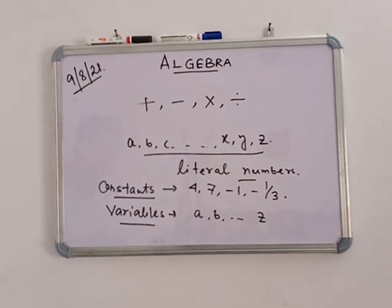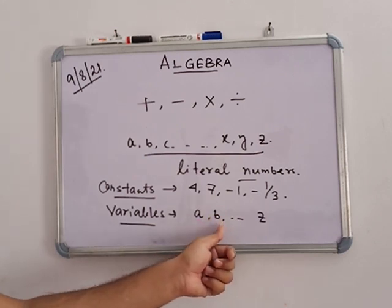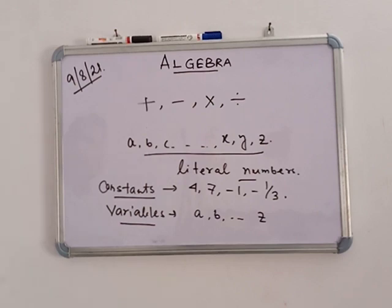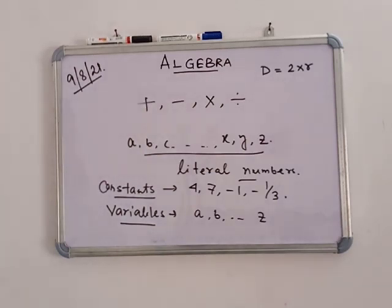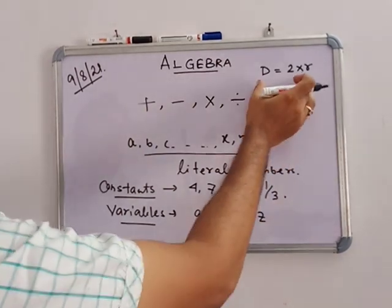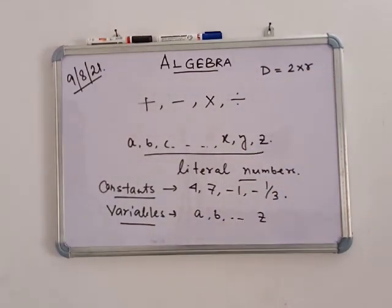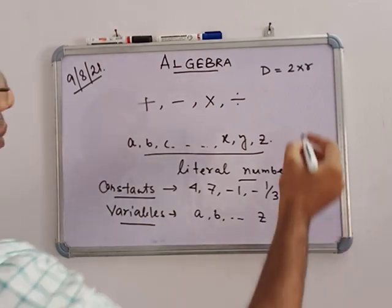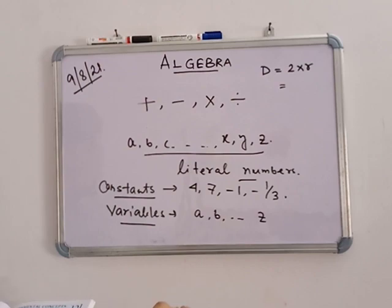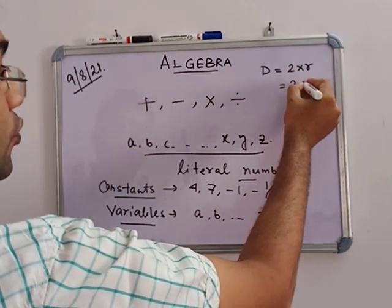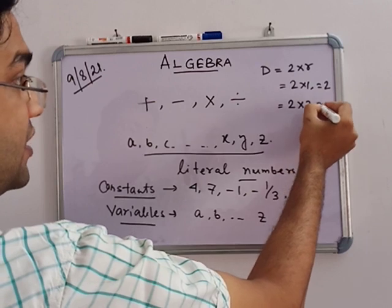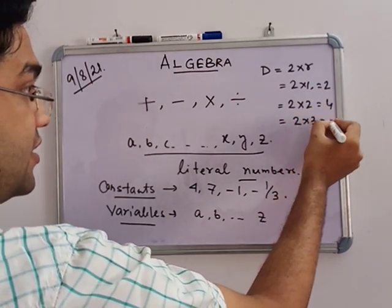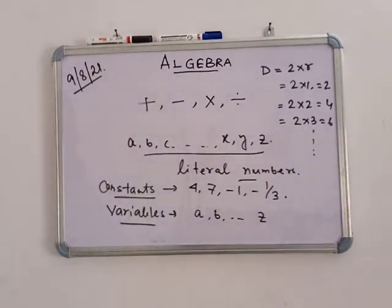For example, how many trees did you count today? A trees, B trees — you can put any value in the position of A or B. We know that D equals 2 into R, that is, diameter equals 2 into radius. Here we can put any value of R and get a different diameter. If R equals 1, D is 2; if R equals 2, D is 4; if R equals 3, D is 6, and so on.